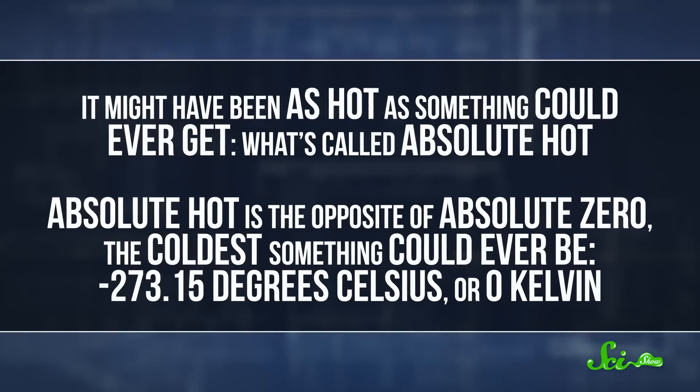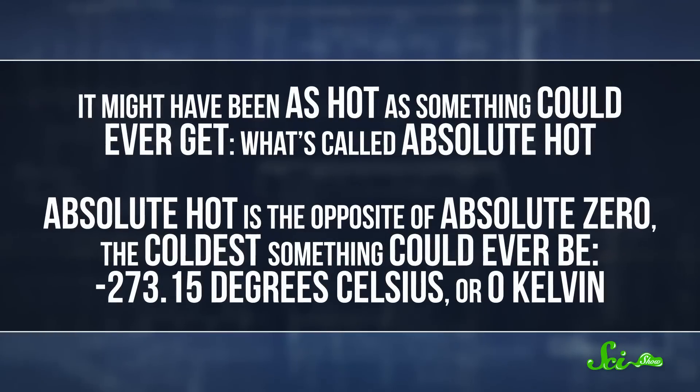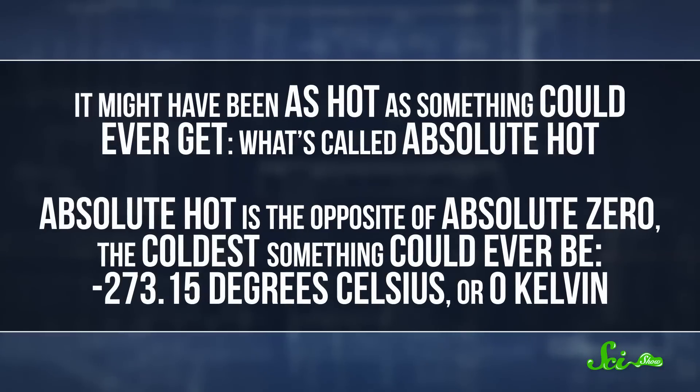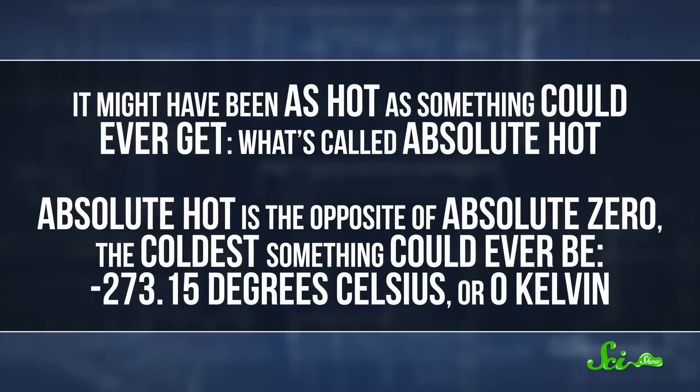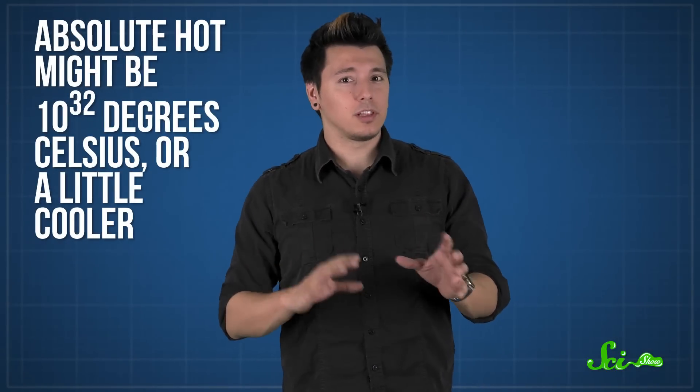In fact, it might have been as hot as something could ever get, what's called absolute hot. Absolute hot is the opposite of absolute zero, the coldest something could ever be, negative 273.15 degrees Celsius, or zero Kelvin. Some physicists believe absolute hot is 10 to the 32nd degrees Celsius, but it might also be a bit lower, like 10 to the 30th or 10 to the 17th degrees.